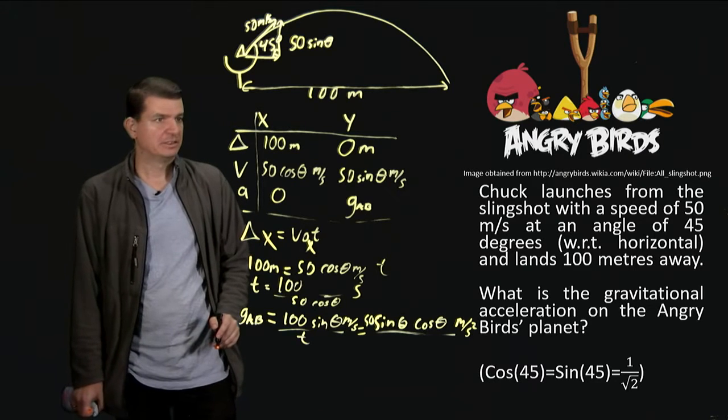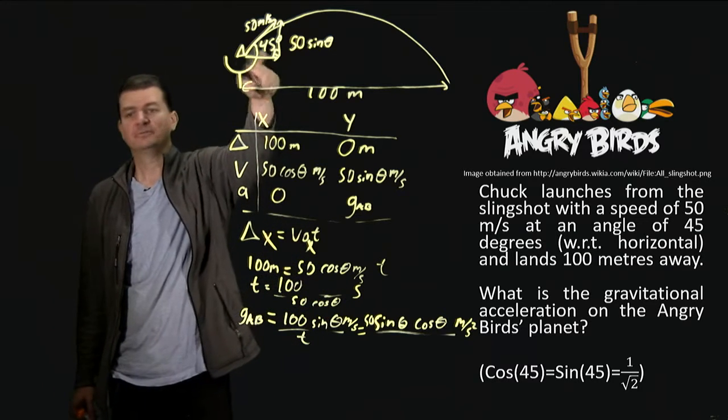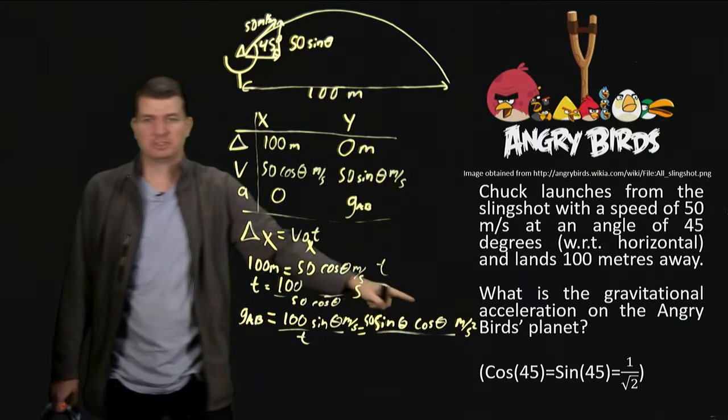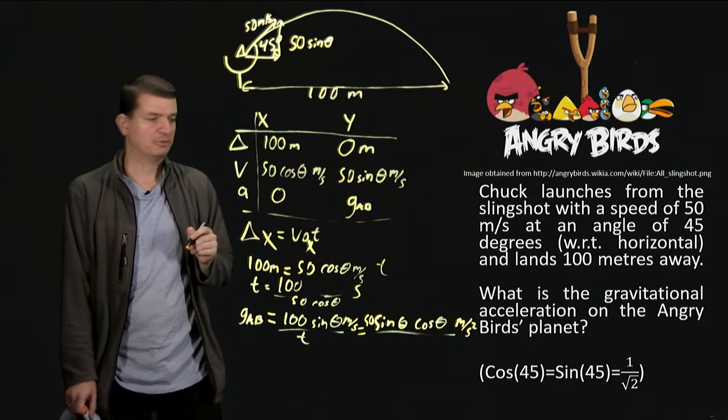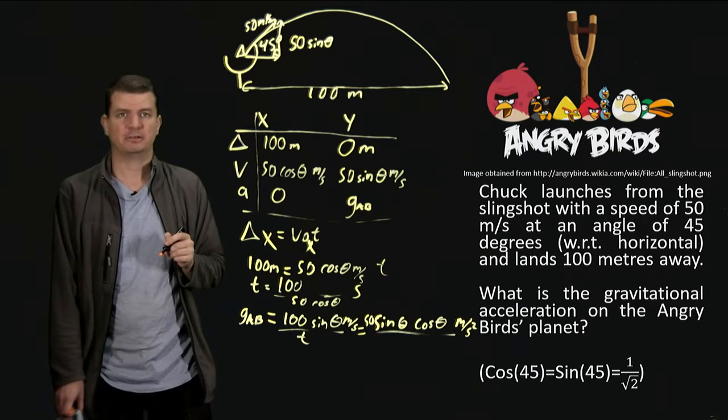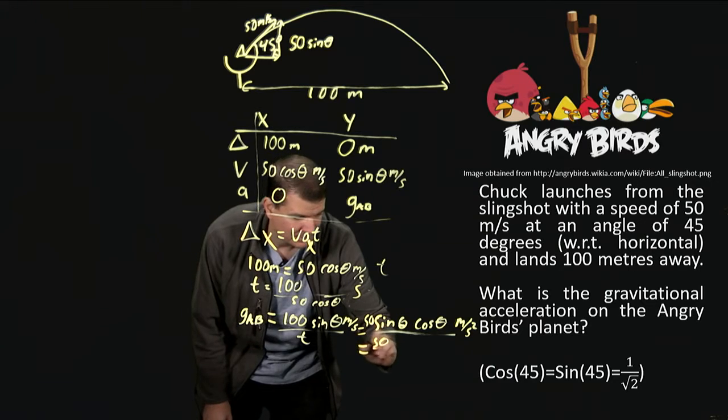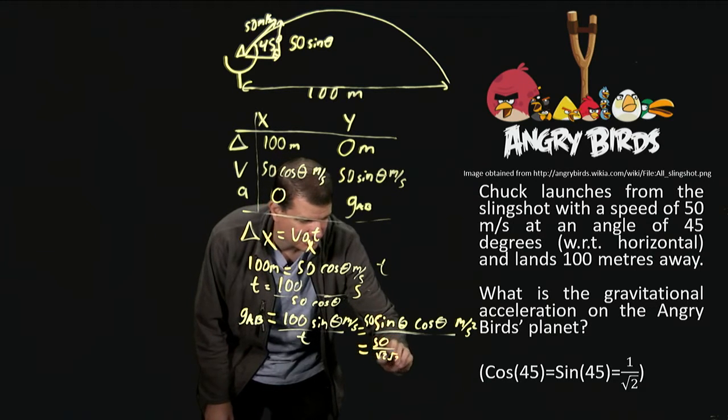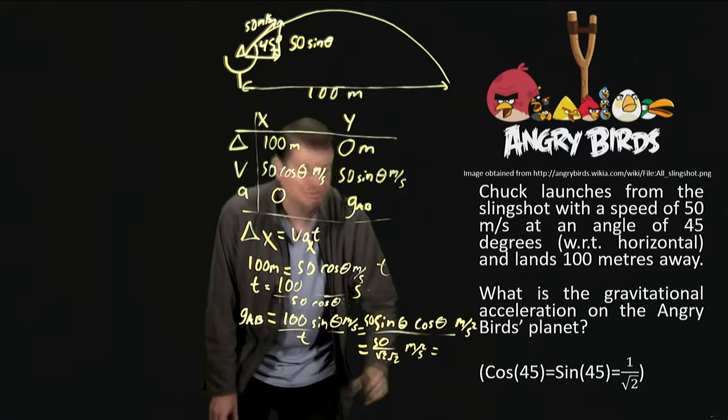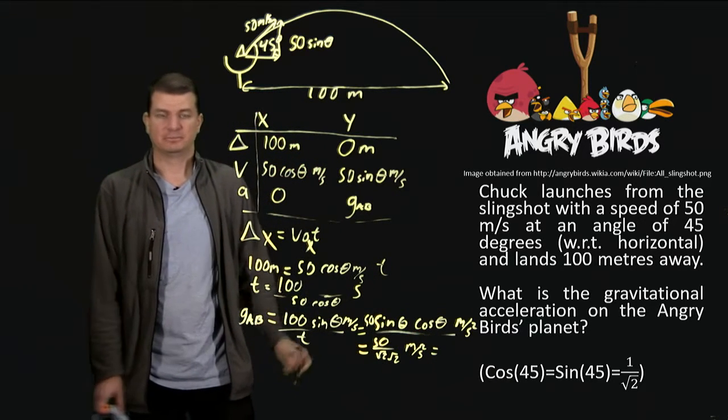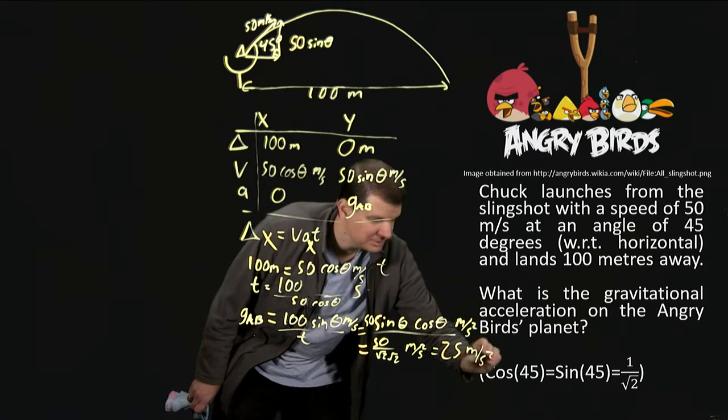So that's almost the answer. We now need to think about the sine of theta and the cosine of theta. Well, the angle is 45 degrees. And in the question just down there, we've told you that the cosine of 45 and the sine of 45 are both the same, and they're equal to 1 on the square root of 2. So we've just got actually 50 divided by square root of 2 times square root of 2 meters per second squared. And square root of 2 times square root of 2 is 2. So 50 divided by 2 is 25 meters per second squared.